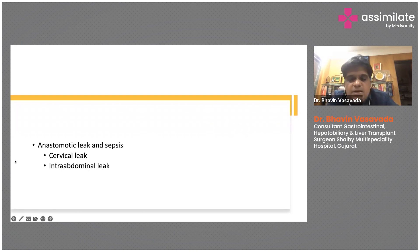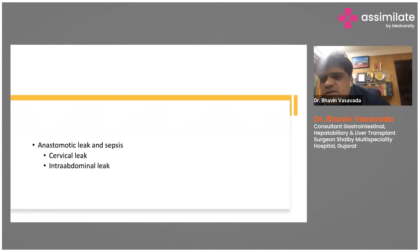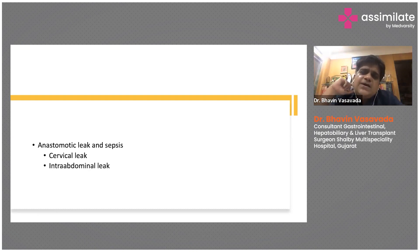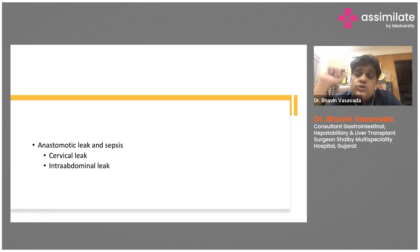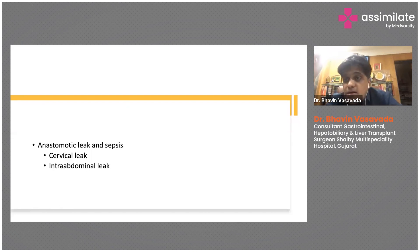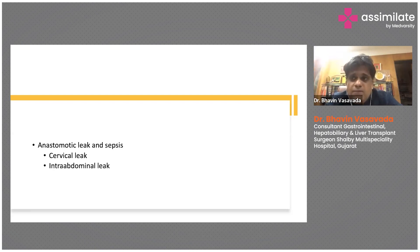The next complication is anastomotic leak. You are joining the conduit — stomach or colon — with the upper part in the neck. In Ivor Lewis, sometimes you join in the chest. There are multiple anastomoses, particularly when using the large intestine as the conduit. As described in abdominal surgery, whenever you do an anastomosis, two to three percent chances of leaks are always present.